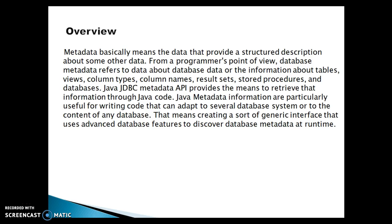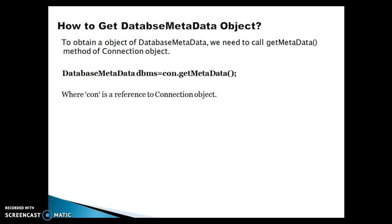Now, how to get the DatabaseMetaData object? To obtain an object of DatabaseMetaData, we need to call the getMetaData() method of the Connection object. In an earlier video tutorial we saw how to get the ResultSetMetaData object — in the ResultSet interface we have a getMetaData() method that returns the ResultSetMetaData, which gives you information about the result set. Similarly, we have a method with the same name available in the Connection interface.